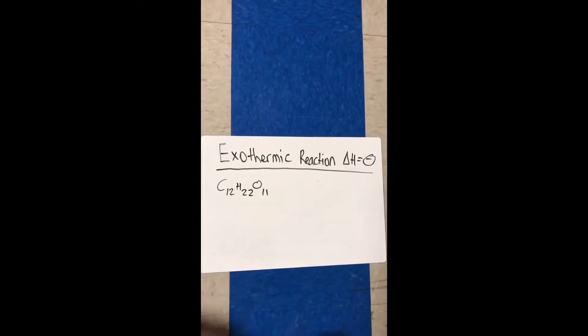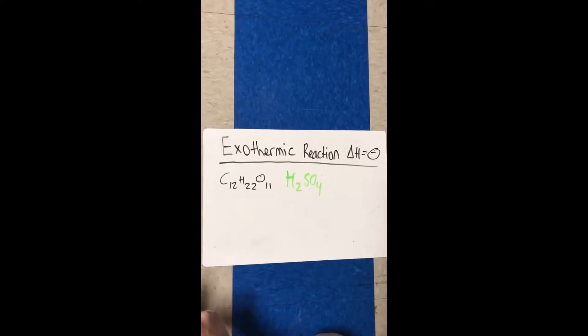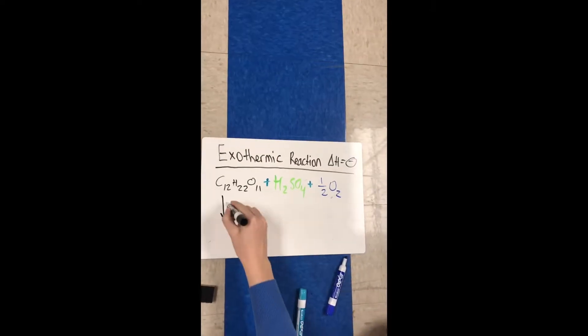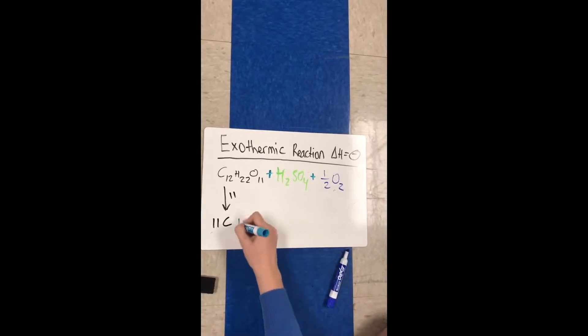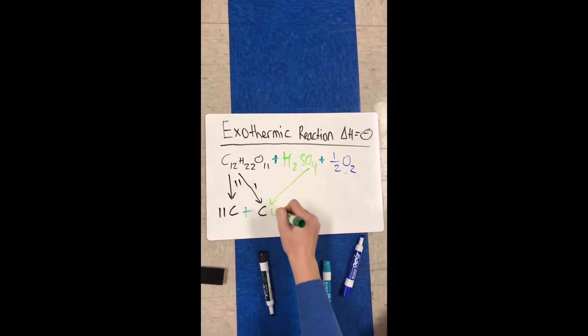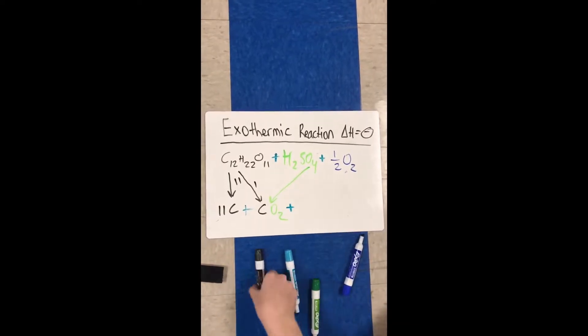We are now going to explain how the reactants rearrange in order to form the products during the reaction. The sugar will start out by donating 11 of its 12 carbon atoms. The remaining carbon will contribute to the formation of carbon dioxide, and the O2 will come from the sulfuric acid.